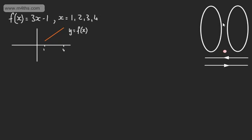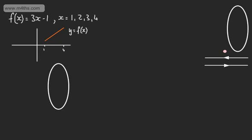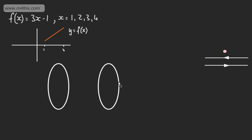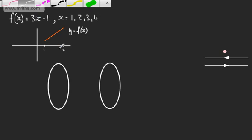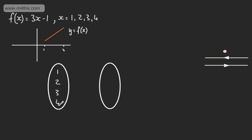If we wanted, we could show this using a mapping. We would take values in the domain and map them to those in the range. So if we took 1, 2, 3, and 4 in the domain — this is x, or the domain — and this now is f(x), or we could say the range.